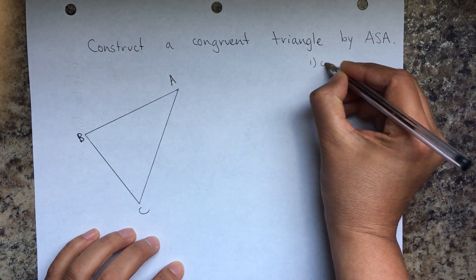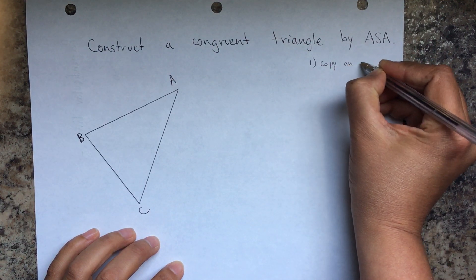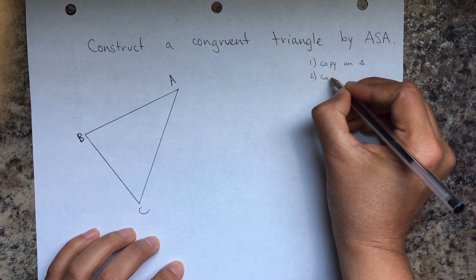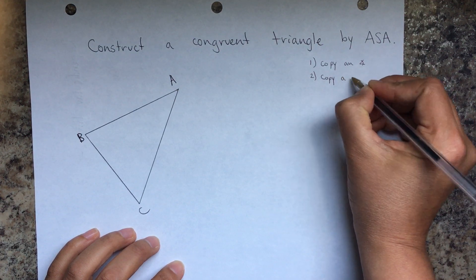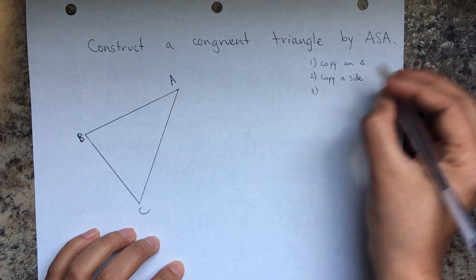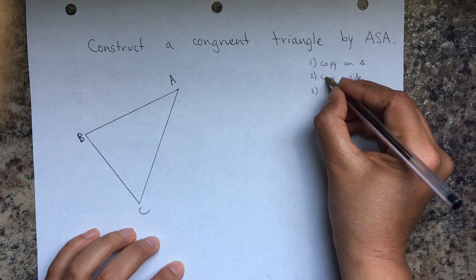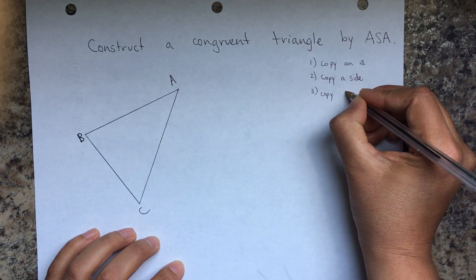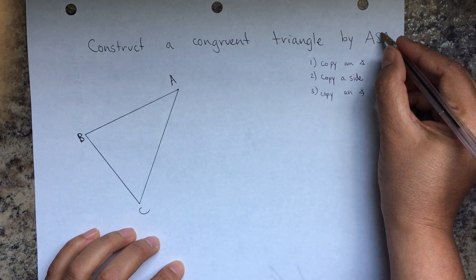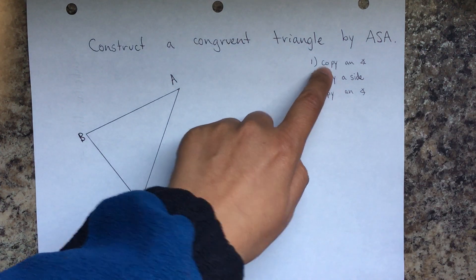What we're going to do is: first, we're going to copy one angle. Second, we're going to copy a side, and it has to be next to the angle that we construct. Then the other angle has to be on the other side of that side.